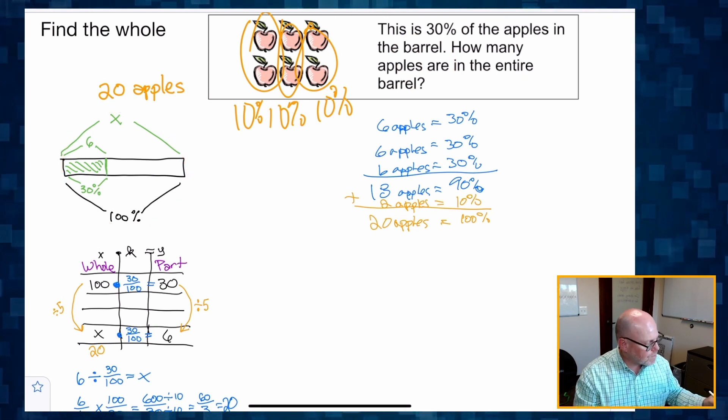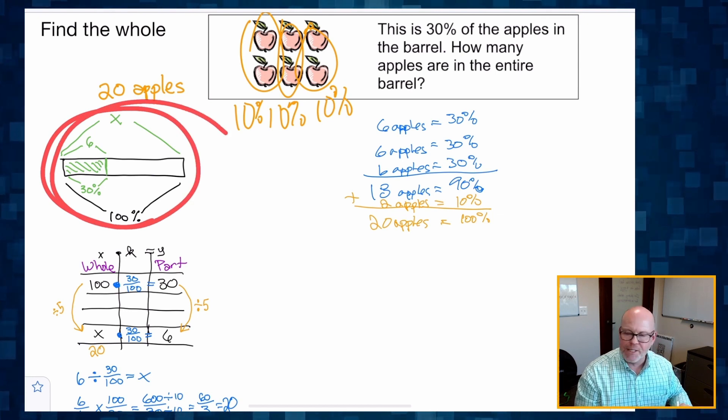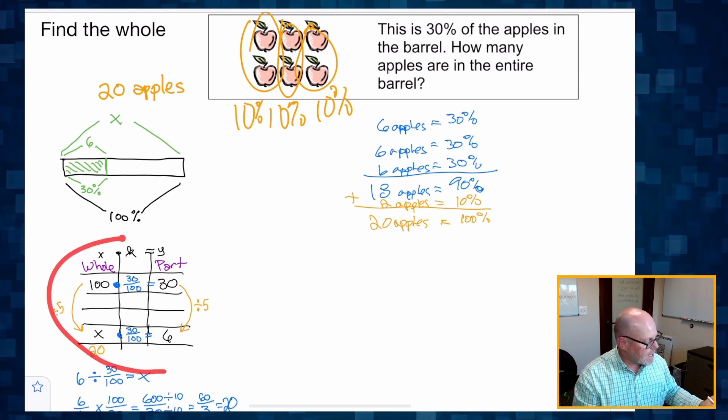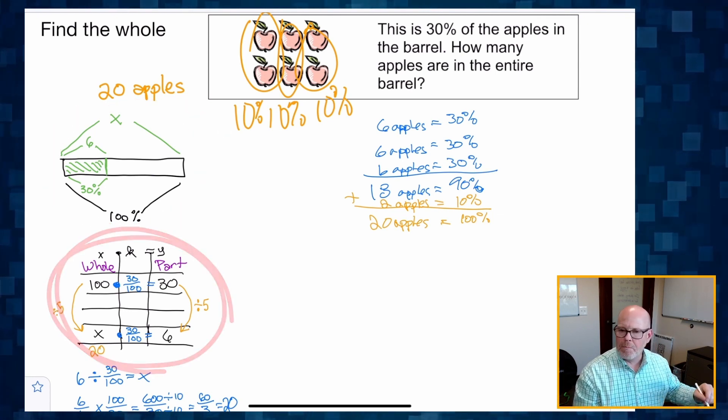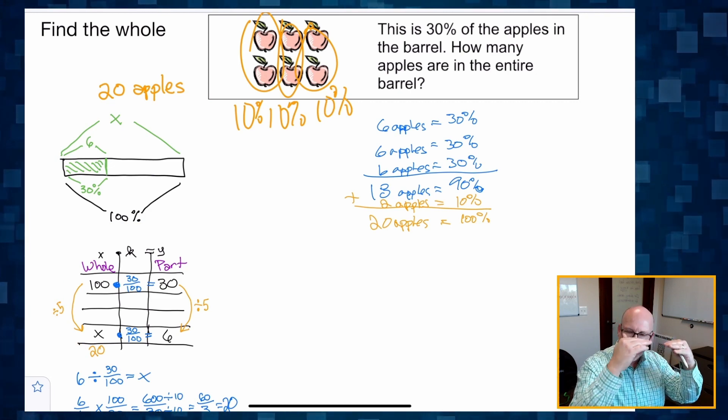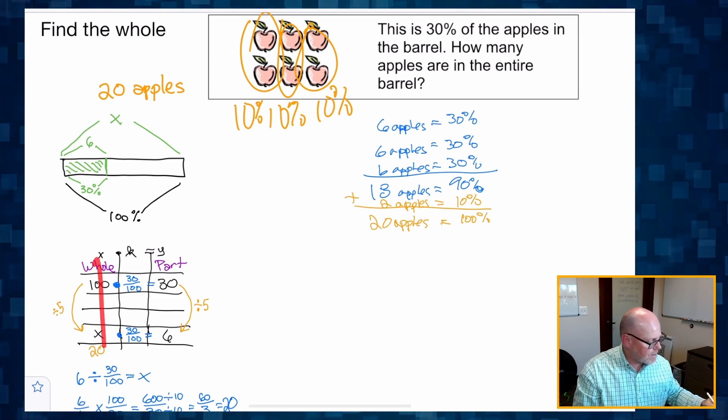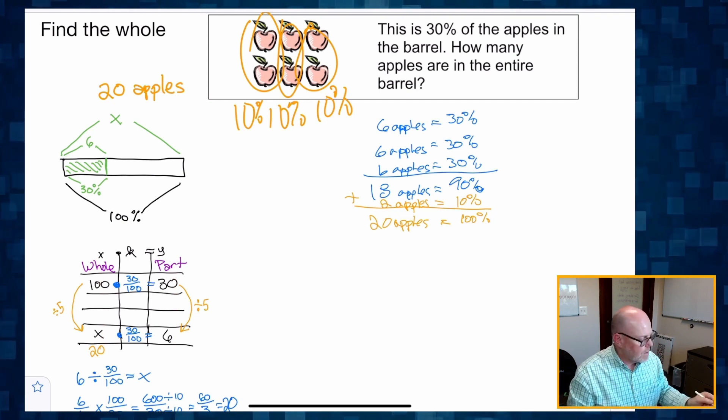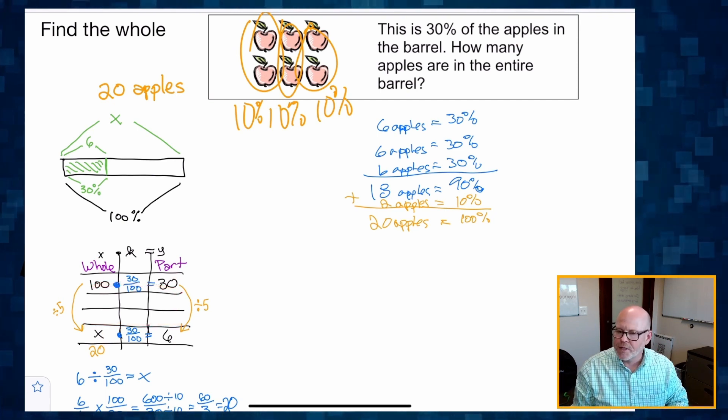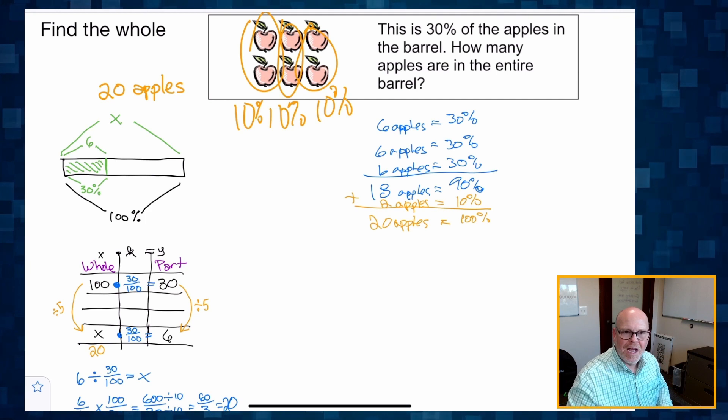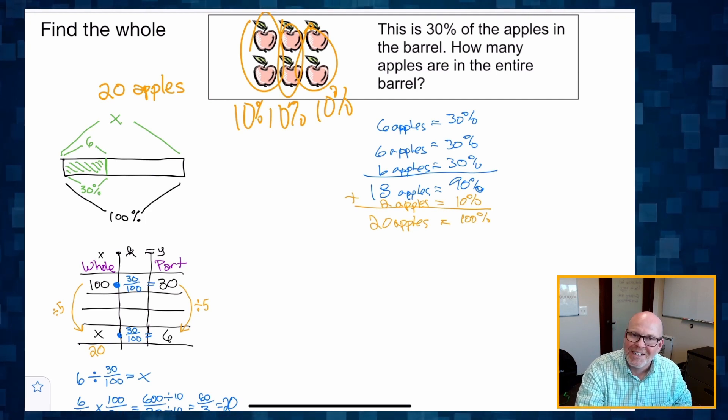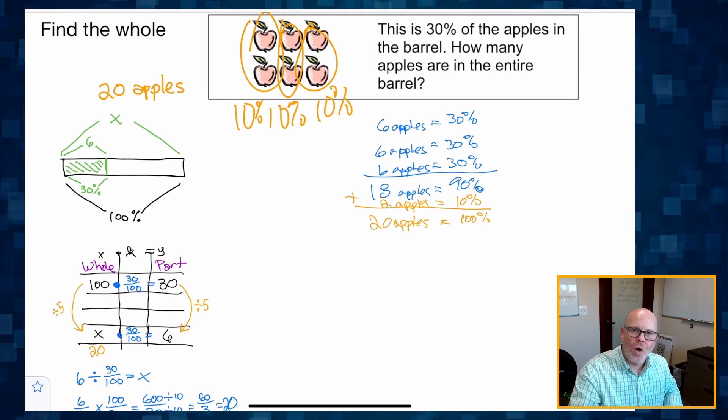And then once we've got the pictorial representation done, we can create a table and then modify that table or manipulate that table using either vertical thinking or horizontal thinking to figure out our answer. And that wraps up Finding the Whole.